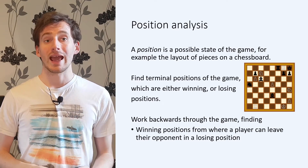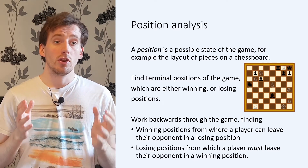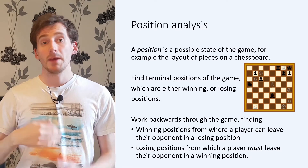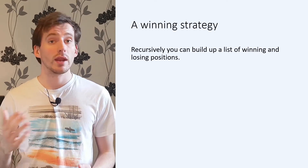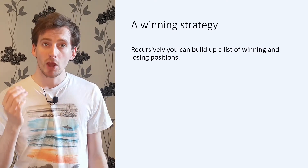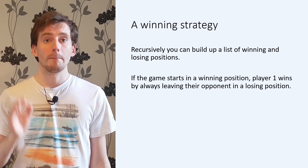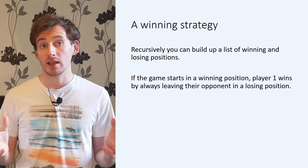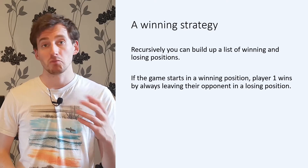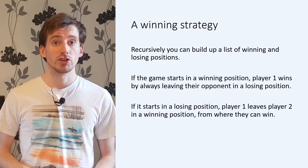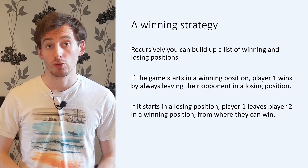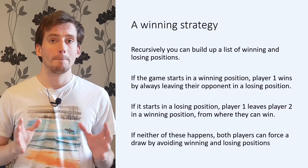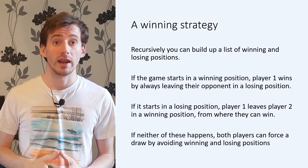Therefore, this position is a losing position. To be a losing position, player one must be able to go on to win whatever player two chooses to do. Repeating this process, we can build up a list of winning and losing positions in the game. If the opening position of the game is a winning position, then player one can always move to leave player two in a losing position, and this is a strategy for them to win the game. If, on the other hand, the game starts in a losing position, player one must leave player two in a winning position, from where they can go on to win. If neither of these things happen, both players can force a draw by avoiding winning and losing positions.